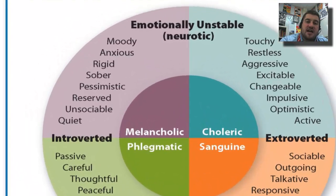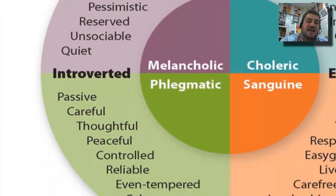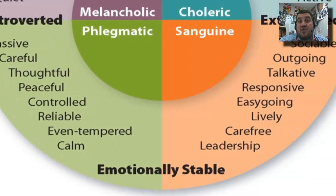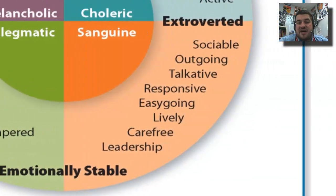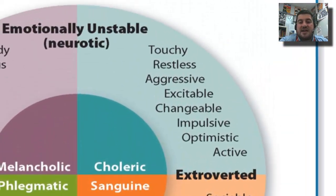We have the emotionally unstable and introverted — these traits may describe you. The emotionally stable and introverted, the green section — these traits may describe you. Emotionally stable and extroverted, the orange section. And emotionally unstable and extroverted — these describe you as well.